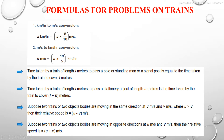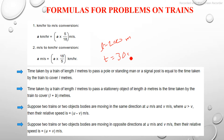The time taken by a train of length L meters to pass a pole, a standing man, or a signal post is equal to the time taken by the train to cover L meters. For example, if there is a train of length 200 meters and the time taken by the train to cross a pole is 30 seconds, that means the train can cover 200 meters in 30 seconds.